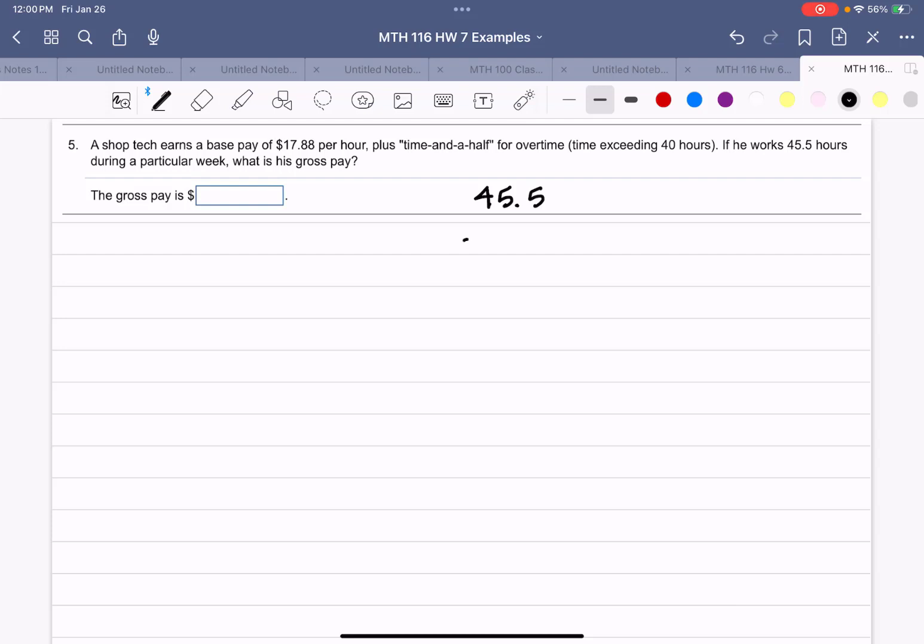The 40 hours is regular. That means at time and a half, there's 5.5 overtime hours. Now the regular pay is $17.88, so 40 times $17.88 equals $715.20.